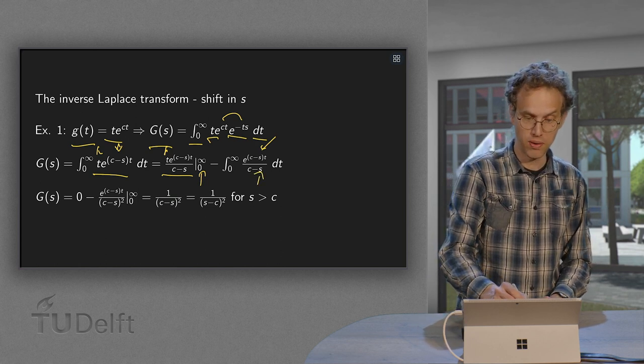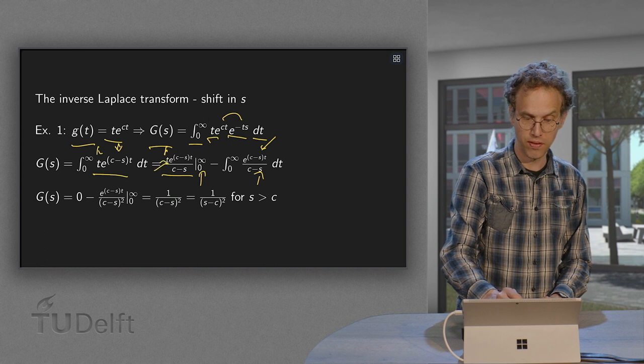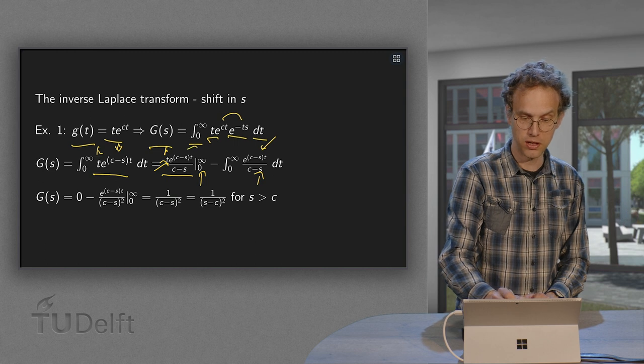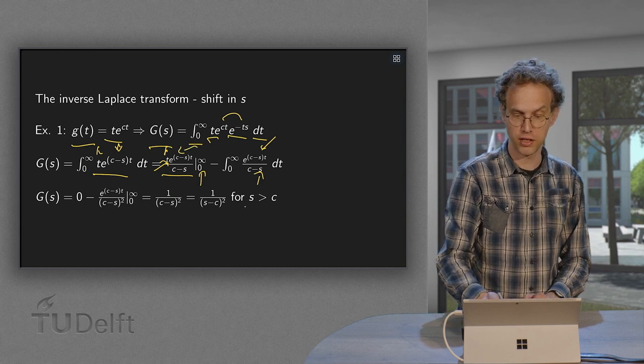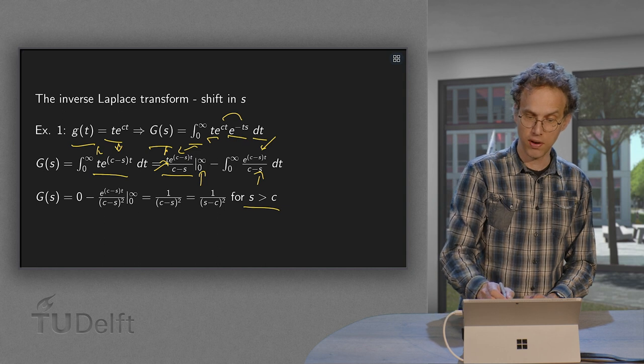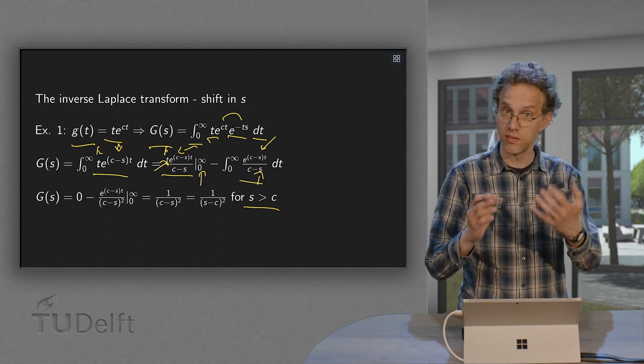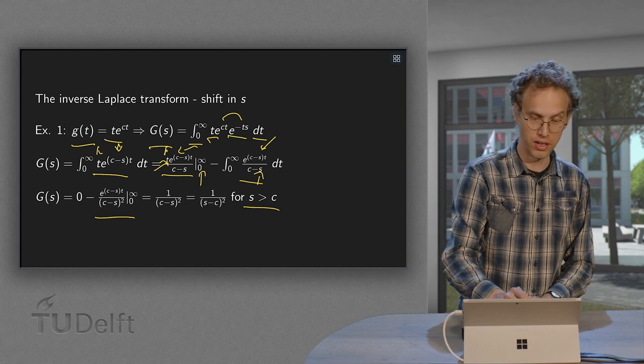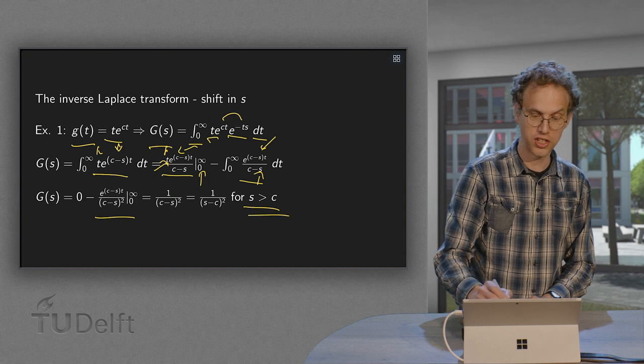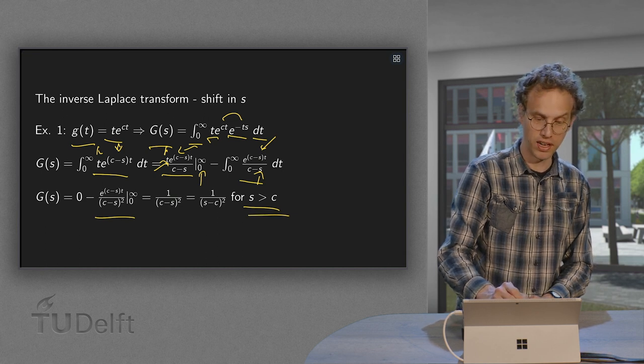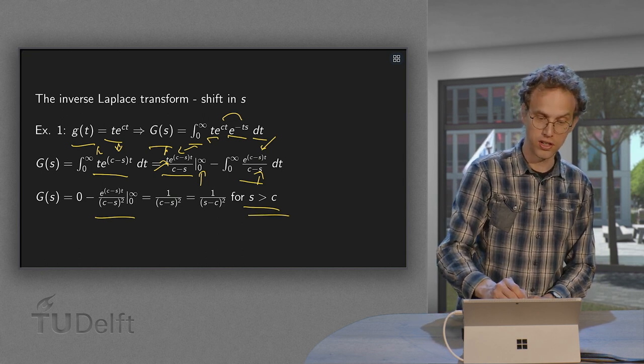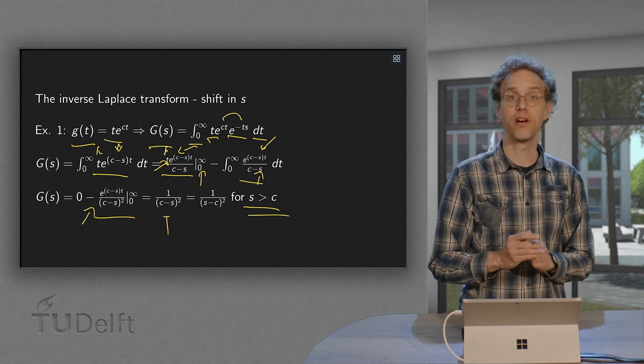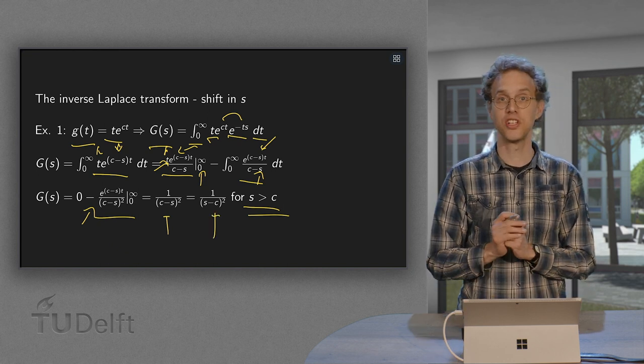Now, the first part is 0. For t=0, we have a t over here, so we get 0. For t to infinity, this exponential goes to 0 if s is bigger than c. And the second part, now we have just an exponential which we can integrate. Again, the upper boundary goes to 0 due to s bigger than c. And for the lower boundary, we get -1/(c-s)² with the additional minus sign. It gives us 1/(c-s)² = 1/(s-c)².